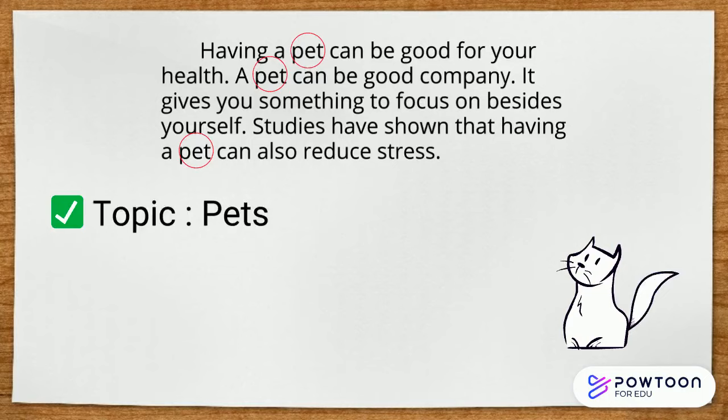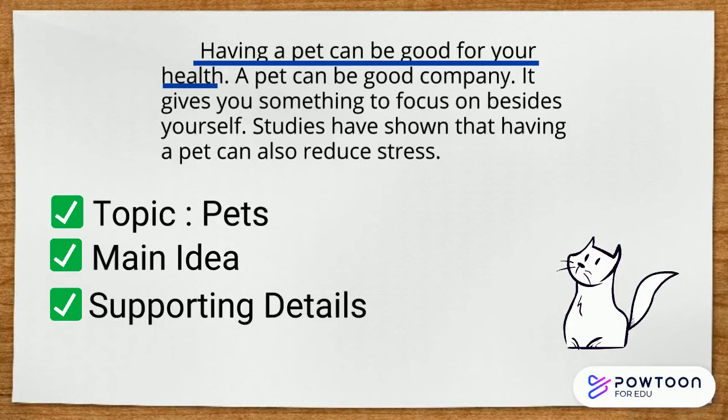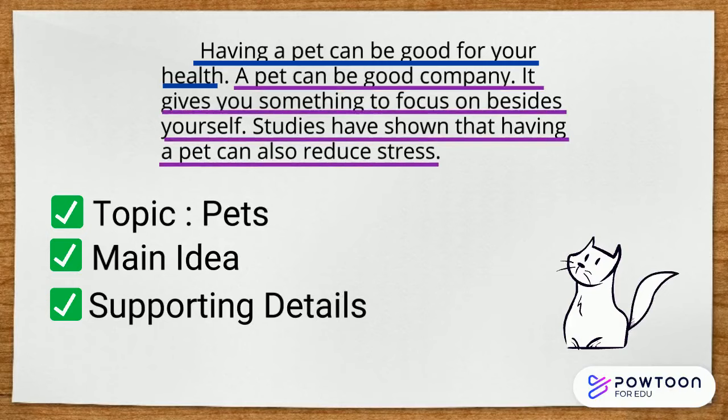Next, what is the main idea? So, what are they trying to prove about pets? That's right here in the first sentence. They are saying having a pet can be good for your health. And finally, what are the supporting details? Those are found in these other sentences. They give the facts and support that pets are good for your health, like being good company, focusing on something else besides yourself, and reducing stress.